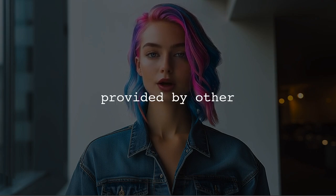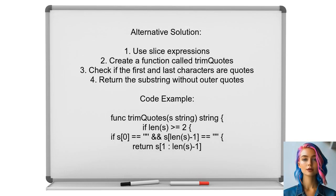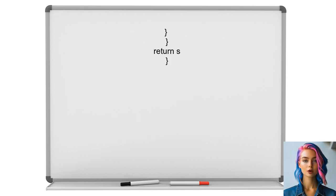Let's look at the answers provided by other users. This user suggests using slice expressions to remove quotes from around a string in Golang. They provide a function called TrimQuotes that checks if the first and last characters are quotes — if they are, it returns the substring without those quotes. The function also handles various test cases to ensure robustness.